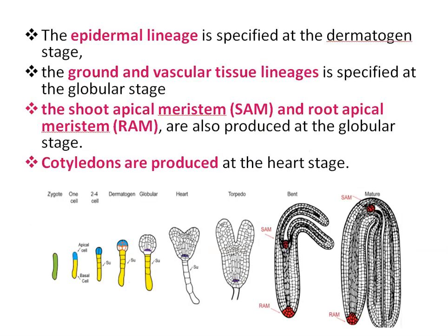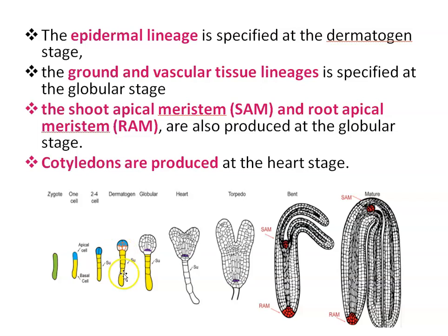First of all, epidermal lineages. Epidermal lineage is specified at the dermatogen stage. You can see here the different stages of embryo development: from zygote, this is the 2 cell stage with apical cell and basal cell, the 2 to 4 cell stage of the embryo, and this is the dermatogen stage. Epidermal lineage is specified at this dermatogen stage.